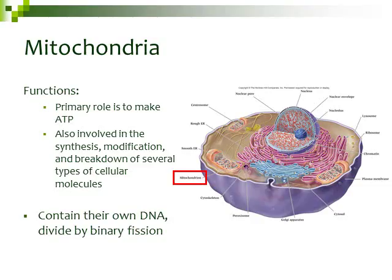Mitochondria contain their own DNA — they have mitochondrial DNA inside of them. They also divide by a process called binary fission, so they can divide and reproduce on their own. That's why they're called semi-autonomous.